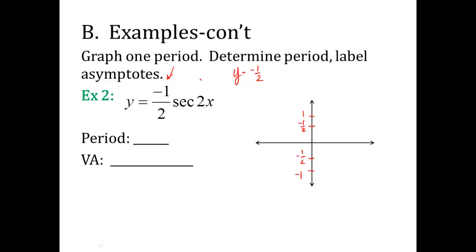Let's take care of period. B is 2, so it means 2π divided by 2, which means the period now is π. Then the Bx minus C, that's this whole thing. You set those equal to your different asymptotes.